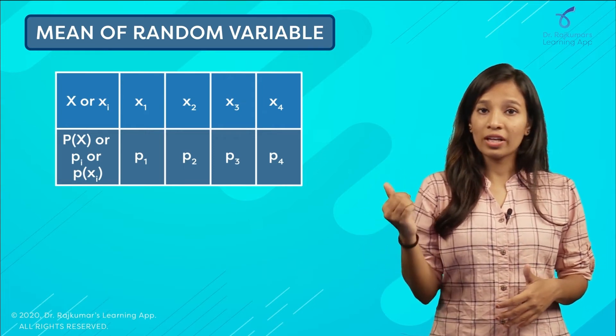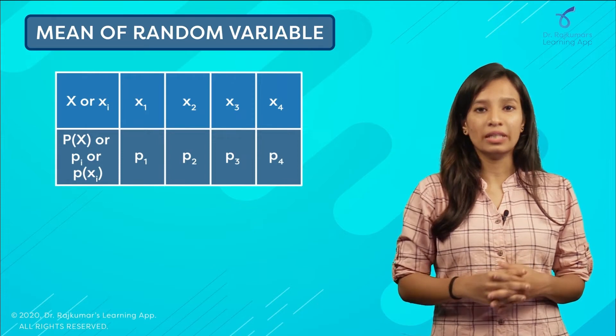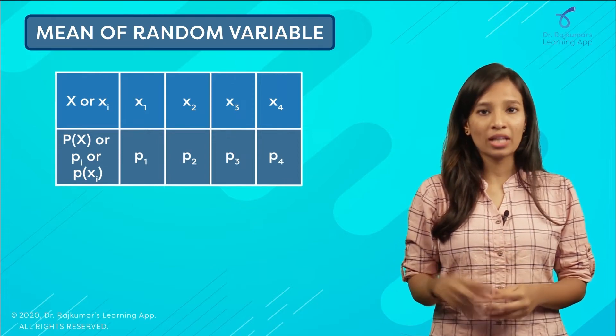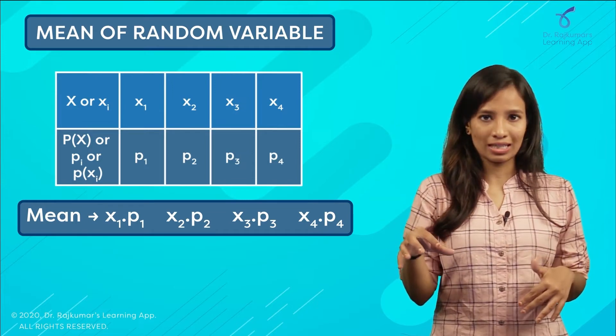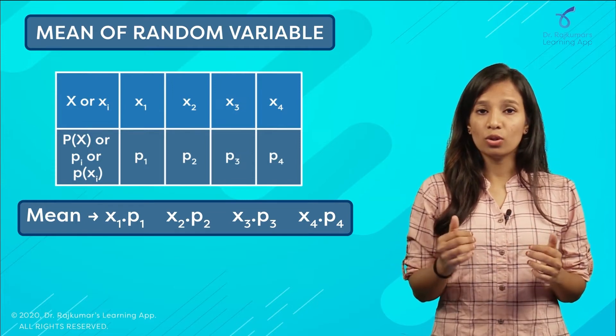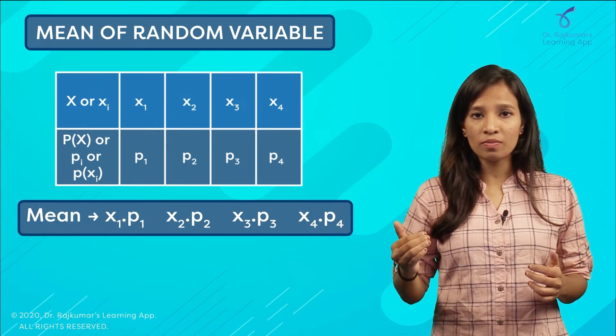To find the mean of this probability, you will have to multiply your x with your p of x, that is the probability of this x. When you do this for all the outcomes and you add them, that is when you will be getting the mean of your probability distribution.